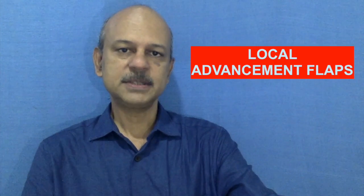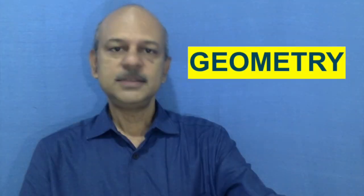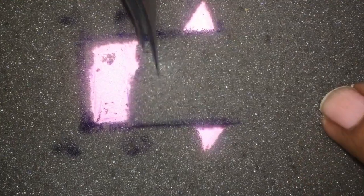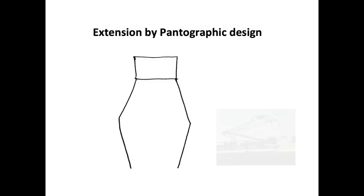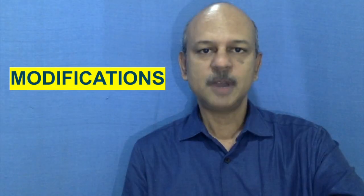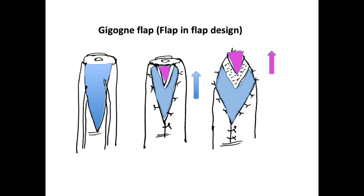The advancement flap is a very commonly done flap in reconstructive surgery, whether on the face or on the limb. This video talks about the geometry of these flaps and the clinical application.